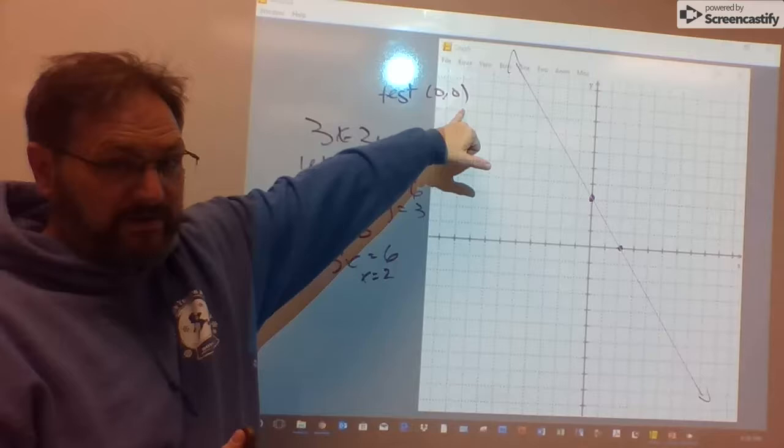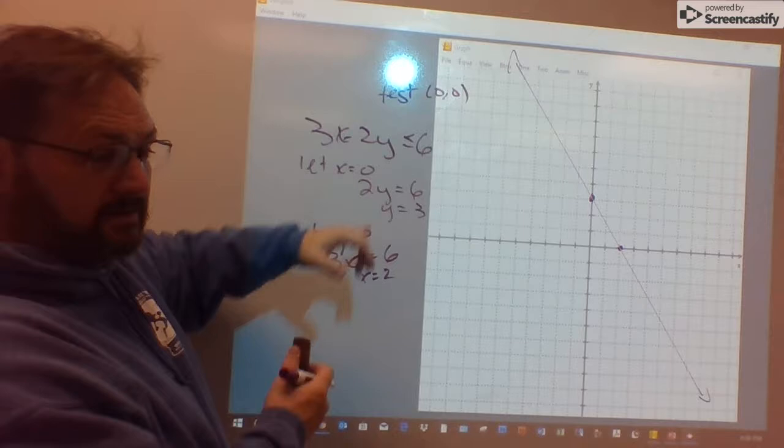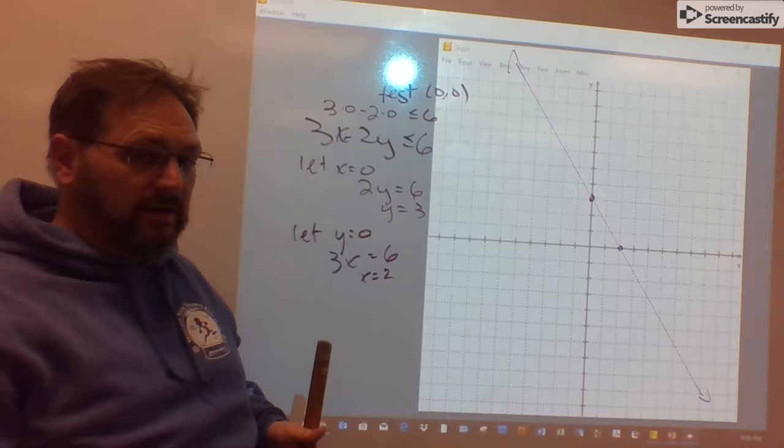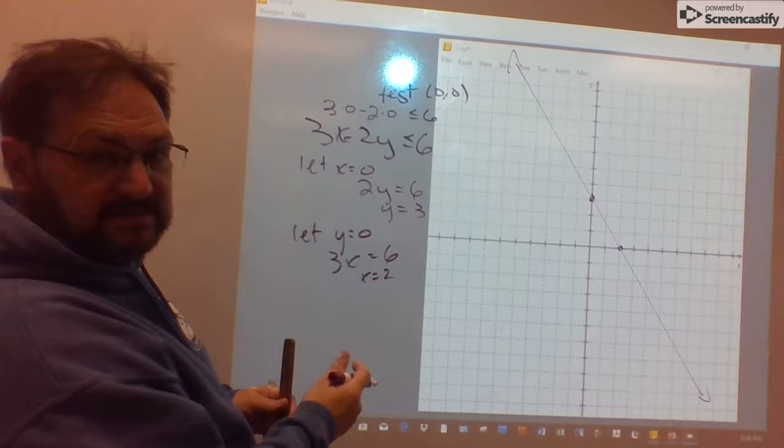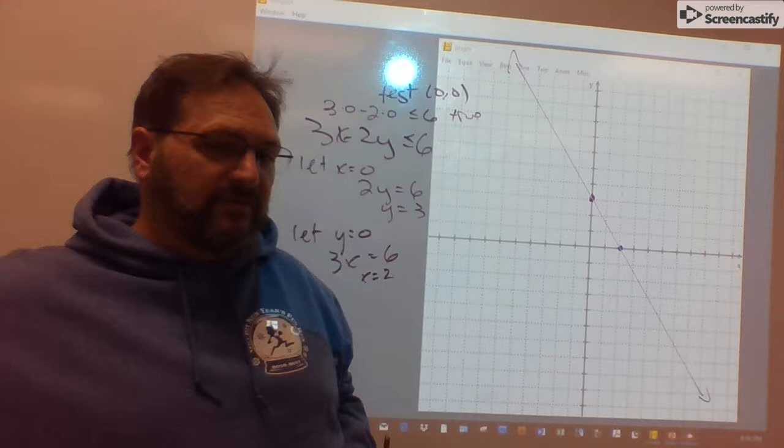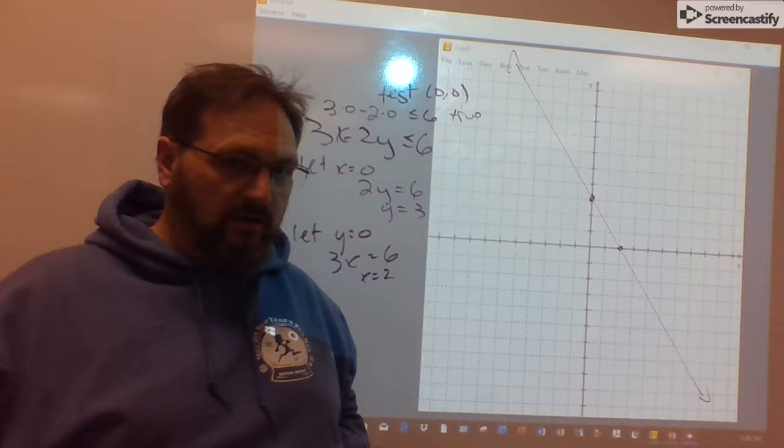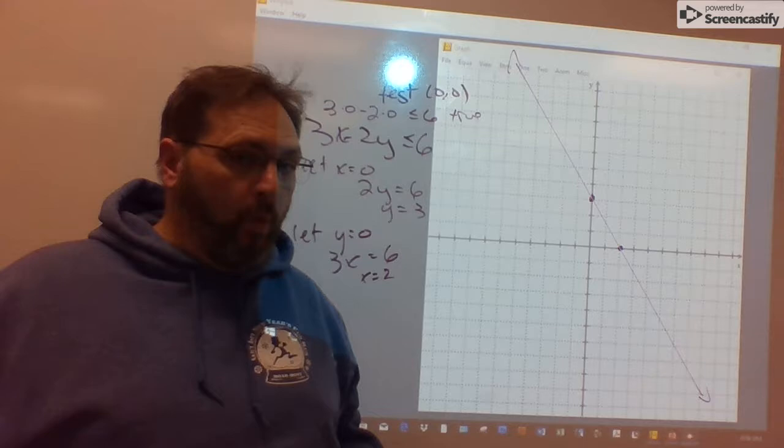If I test the point 0, 0, I'm going to get 3 times 0 minus 2 times 0, and I want to know if that statement is true or false. Well, the left side is 0 and 0 is less than 6. That's true. The side of the line that contains the origin, then, solves the inequality. The other side of the line won't.